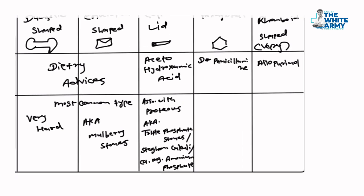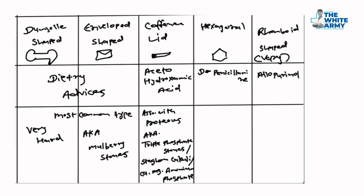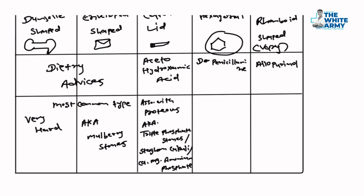Cystine stone: it is hexagonal like a diamond, and diamonds are very strong — so this stone is also a very hard stone. It is seen in cystinuria.